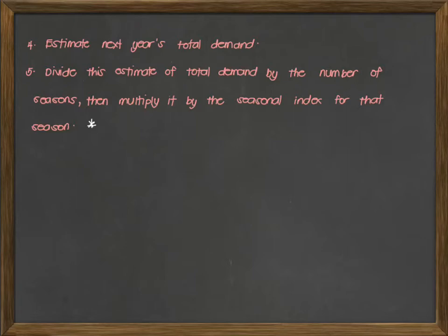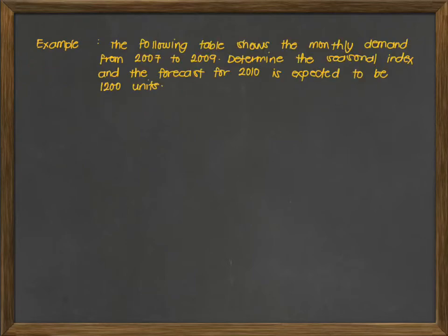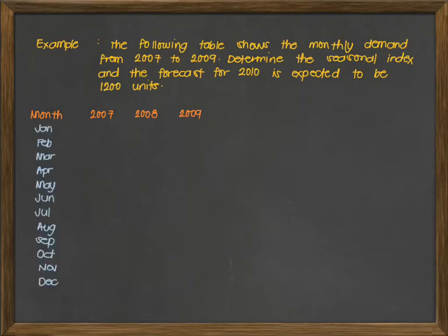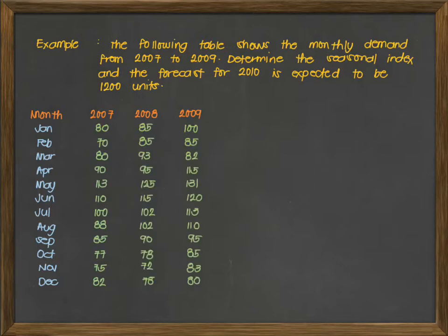Now, let us proceed with our example. The following table shows the monthly demand from 2007 to 2009. We want to determine the seasonal index, and the forecast for 2010 is expected to be 1,200 units. We have the following information from 2007 to 2009, and the monthly values from January to December. For our solution, we have to compute for the monthly average from 2007 to 2009.